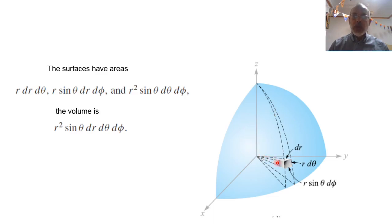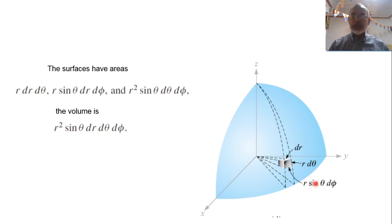If we consider an infinitesimal volume in spherical coordinates, the arms of this infinitesimal element are as follows: in the direction of R it is dr; in the direction of theta it is r dθ; and in the direction of phi it is r sinθ dφ. So the total incremental volume is r² sinθ dr dθ dφ.